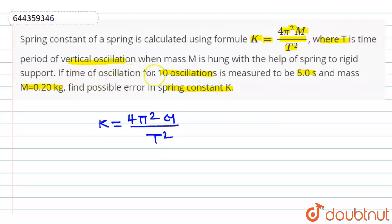Here, time of oscillation for 10 oscillations is 5 seconds. If the time of oscillations for 10 oscillations is 5 seconds, then for 1 oscillation, let us assume the time is x.